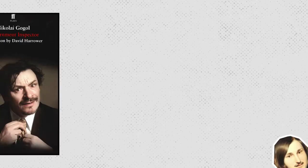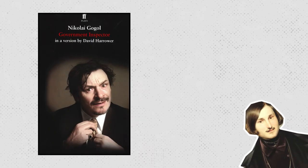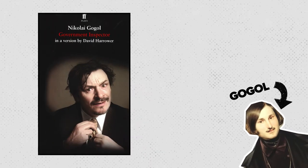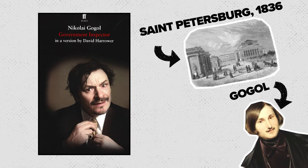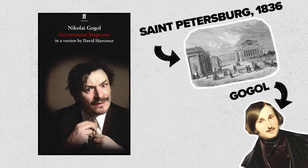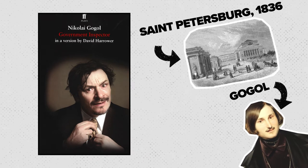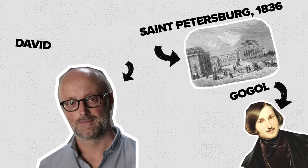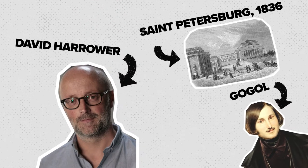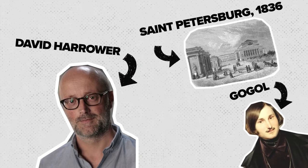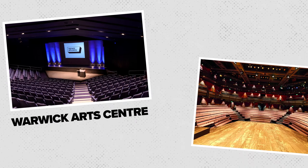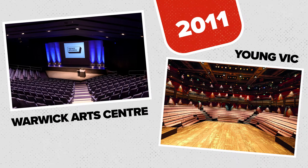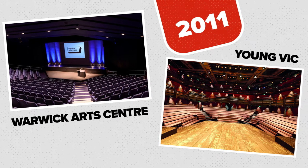The Government Inspector was written by Russian author Nikolai Gogol and it was first performed in St Petersburg, Russia in 1836. David Harrower, a Scottish playwright, wrote this version calling it simply Government Inspector, and it premiered at Warwick Arts Centre and the Young Vic in London in 2011.